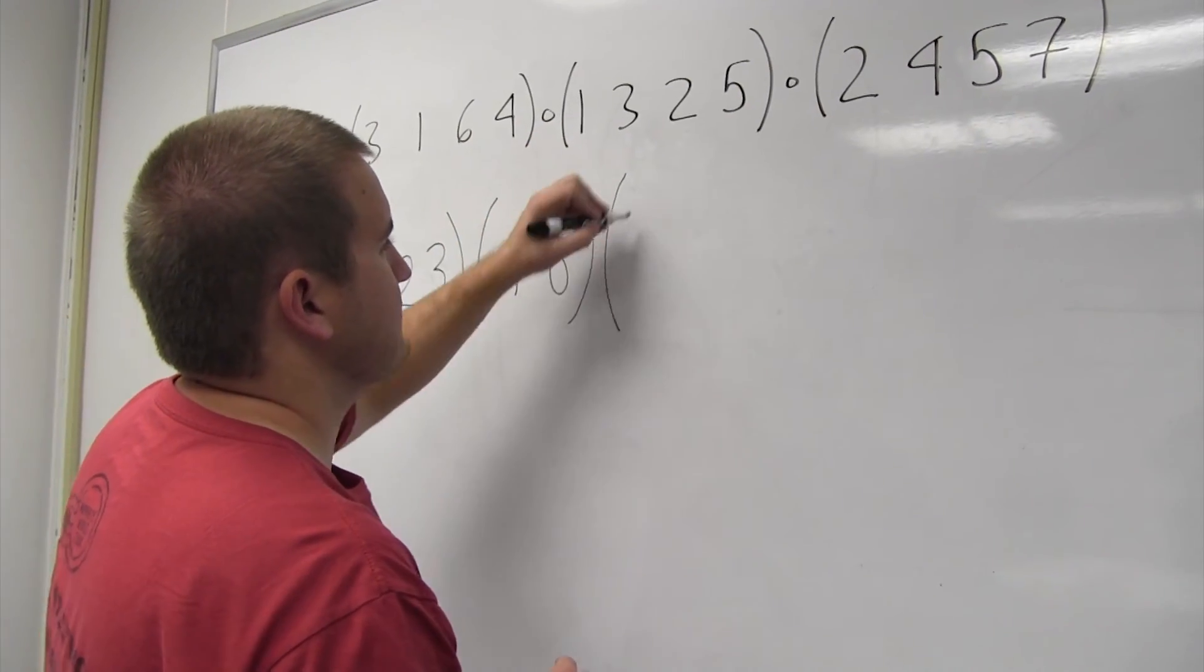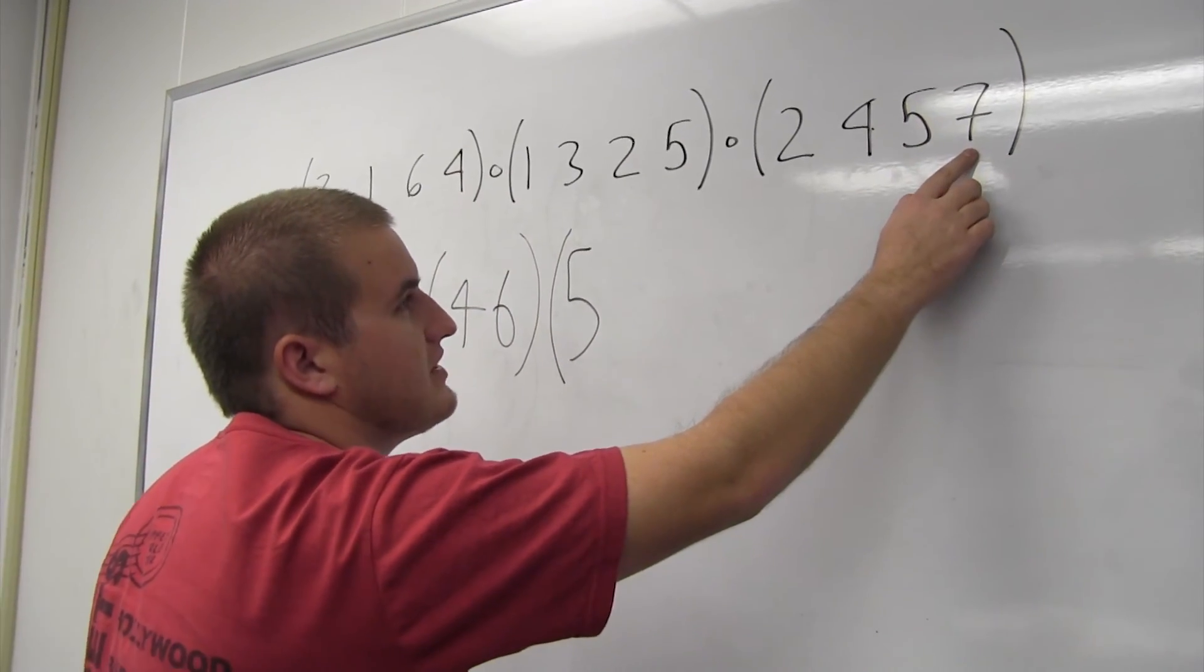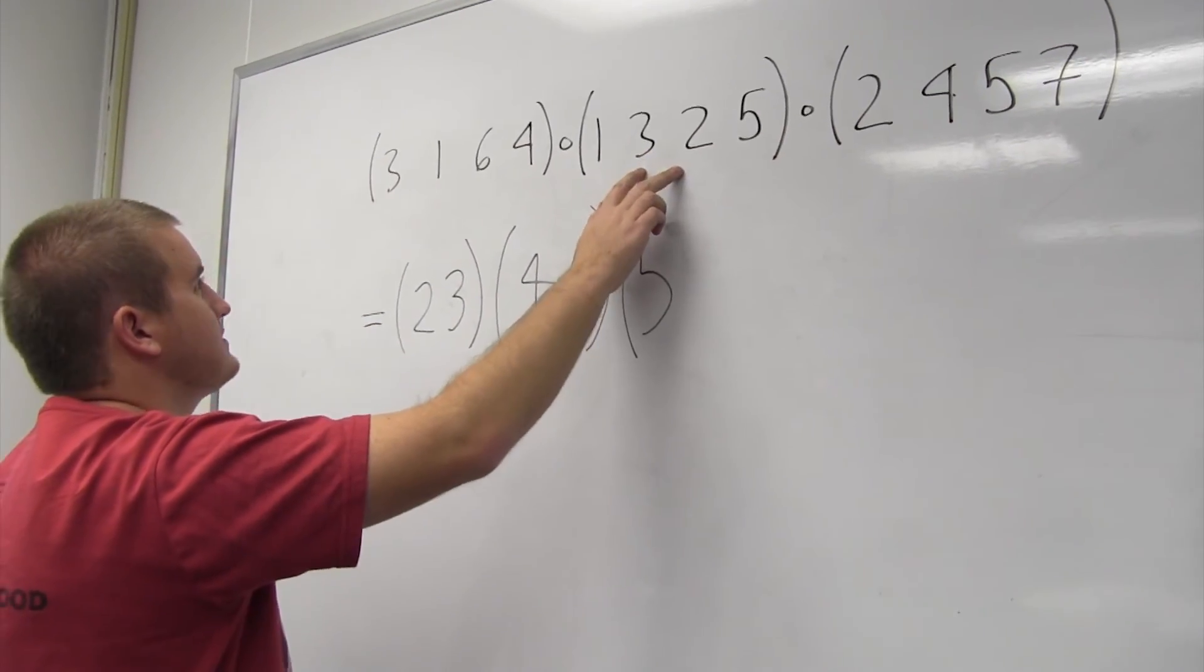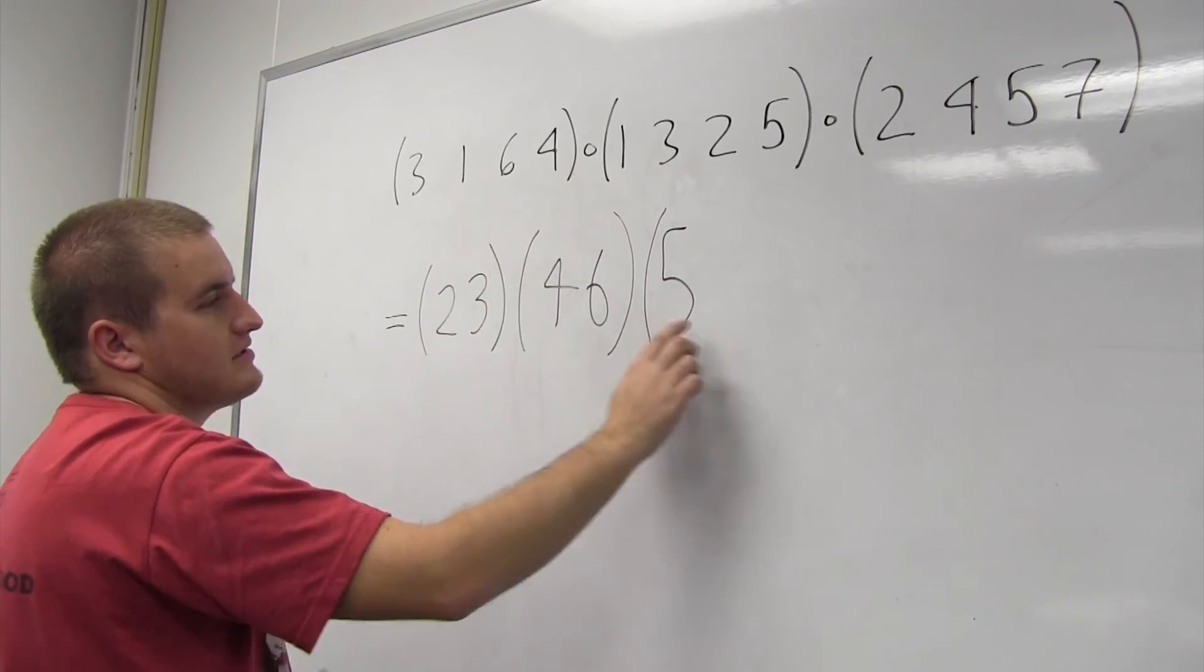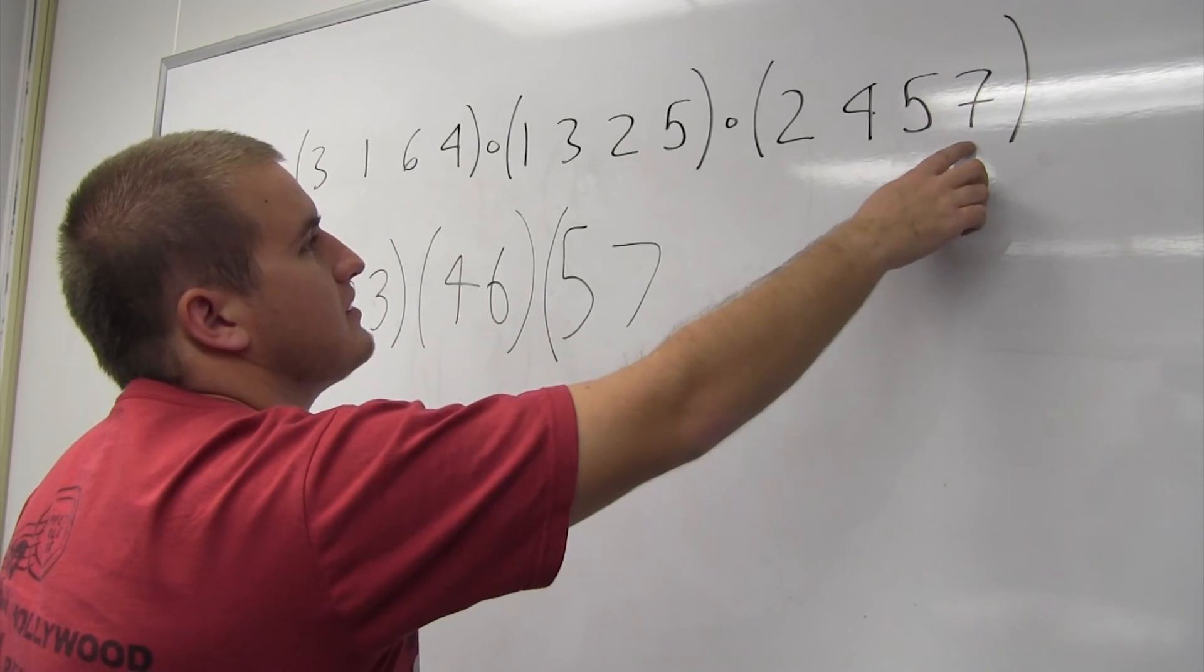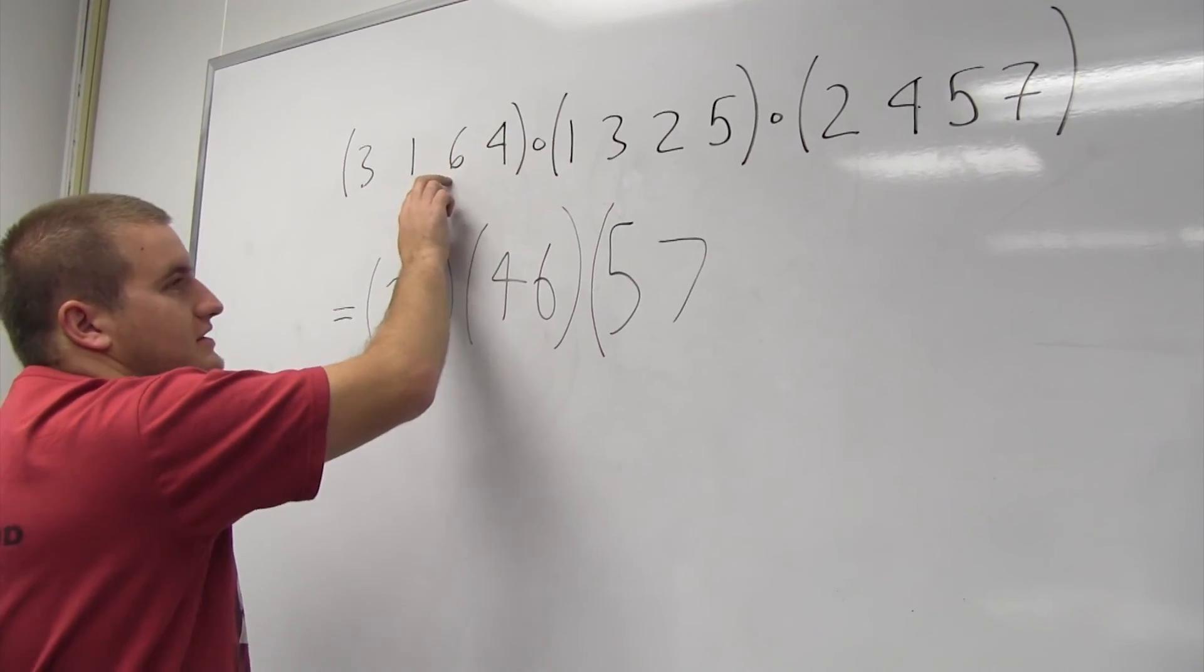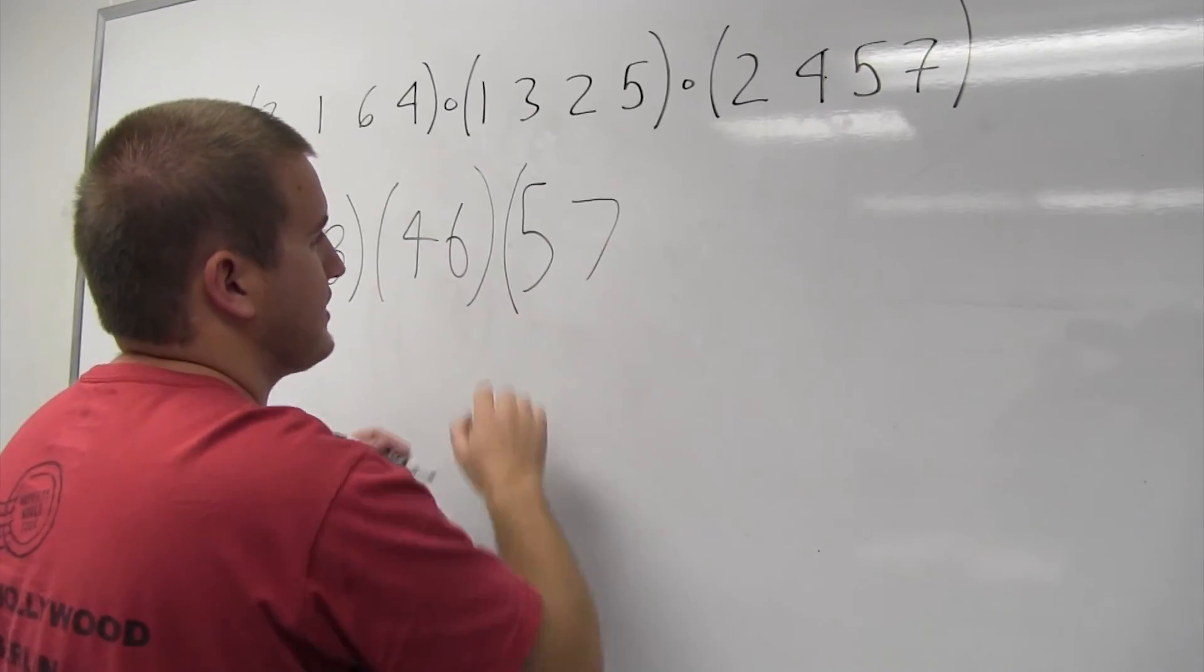And next, we'll try 5, because that's right after 4, and we haven't done that one yet. 5 ends up going to 7 here, and then it stays fixed here, and it stays fixed here. So it ends up at 7. And then the 7 goes to 2, and the 2 ends up going to 5, and then it's fixed here. So 7 goes back to 5.